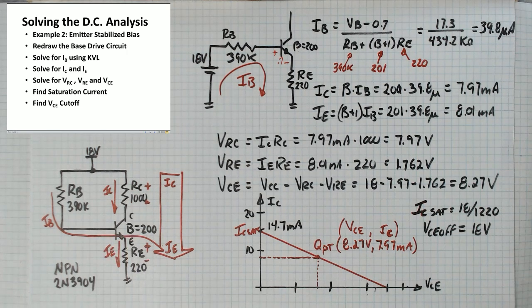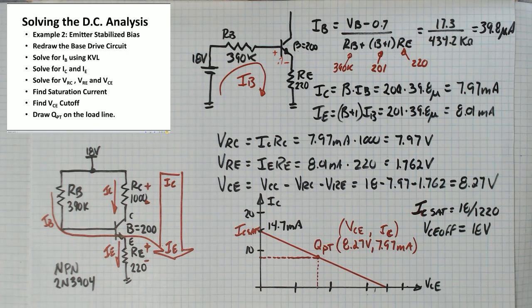That's going to go to 18 so that's going to be 18 volts. What's left is to draw your load line from IC sat to VCE off and plot your Q point on the load line.